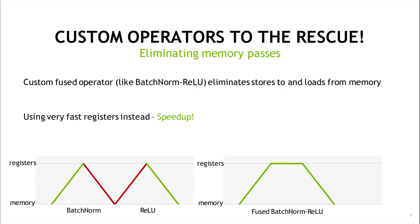So what can we do to get rid of such performance limitations from memory-bound operations? The easiest way to deal with this problem is to introduce custom operations. The performance limitation of memory-bound operations comes from memory passes — loading data from main memory to registers and then storing it back. For example, if we take batch norm followed by ReLU, we can see that batch norm first loads data from memory to registers, performs its computation, and stores data back. Subsequently, ReLU loads the output of batch norm into registers again, performs its own computation, and stores the result to main memory. If we write a custom fused operator — in this case batch norm ReLU — we eliminate the intermediate store from registers to main memory and back, keeping the batch norm output in registers, which results in a speedup.